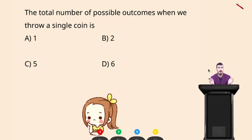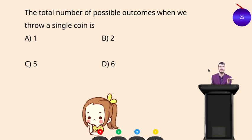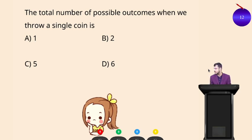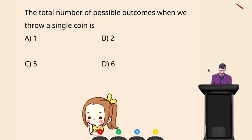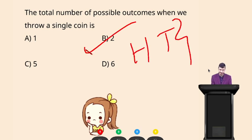Question time: the total number of possible outcomes when throwing a single coin — options A: 1; B: 2; C: 5; D: 6. Time's up — the right answer is option B: 2, because there are two outcomes: head and tail.